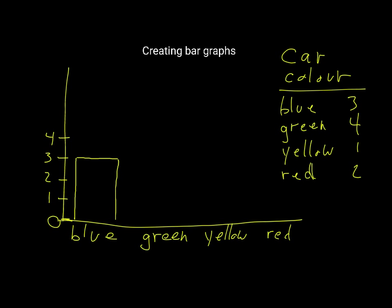I have to make sure that the space between the y-axis and the side of the bar is roughly the same between the blue and the green. Since I'm not using squared paper it's going to be a little difficult. The green cars are four, so I go up to four and across and down.